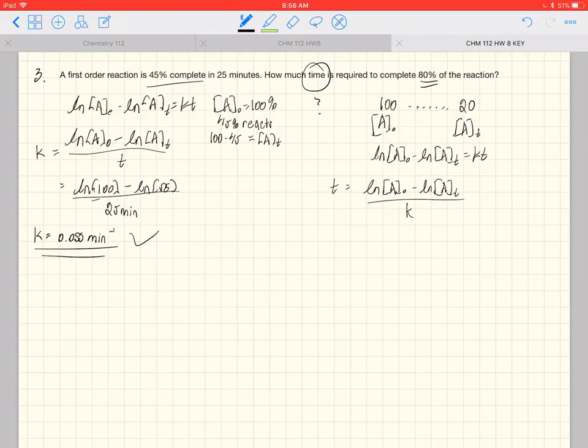So, in this case, we plug things in and see what we get. Natural log of a naught is ln of 100, minus ln of 20. And we divide all that by the k, 0.055 per minute. And let's go ahead and punch that into our wonderful calculator.